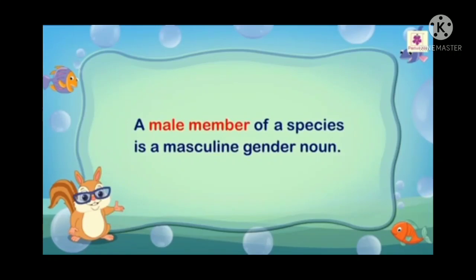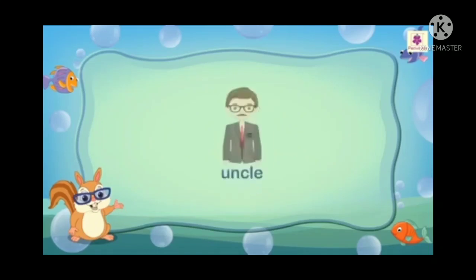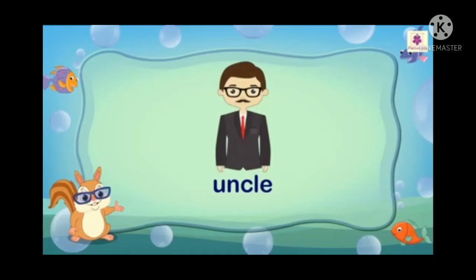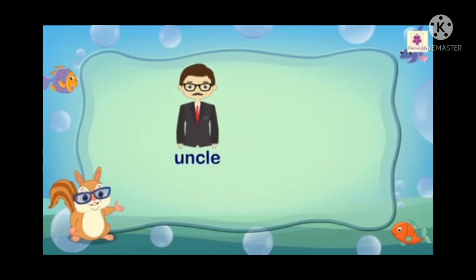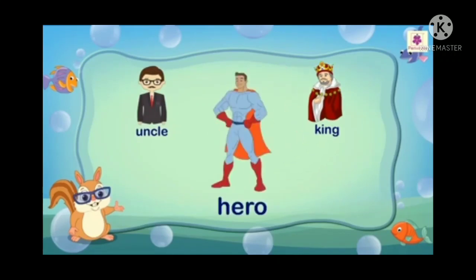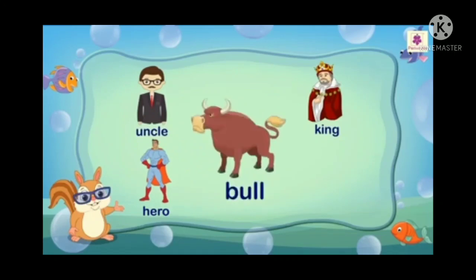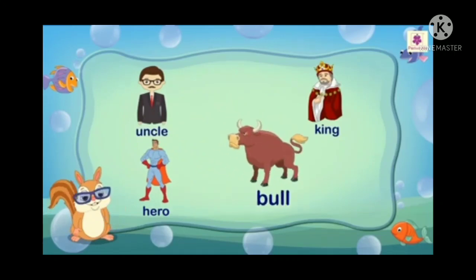The first one is masculine. A male member of your species is your masculine gender noun. It is male. We will see a few examples: uncle, king, hero, and bull. These are the masculine gender.